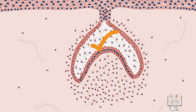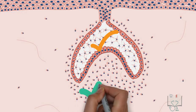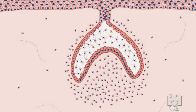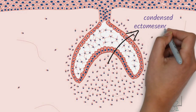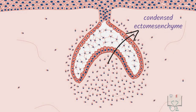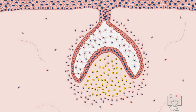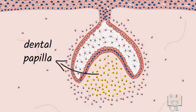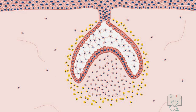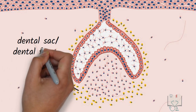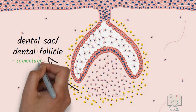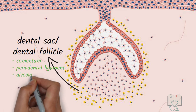Coming to the surrounding connective tissue: the dense collection of ectomesenchymal cells below and around the enamel organ — called ectomesenchymal condensation — continues to show proliferation. This area can now be roughly differentiated into two parts. The cells within the concavity of the enamel organ and below it form the dental papilla, which later forms pulp and dentine. The ectomesenchyme surrounding the dental papilla and enamel organ is called the dental sac or dental follicle, which later forms cementum, periodontal ligament, and alveolar bone.